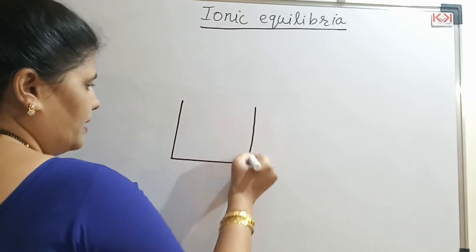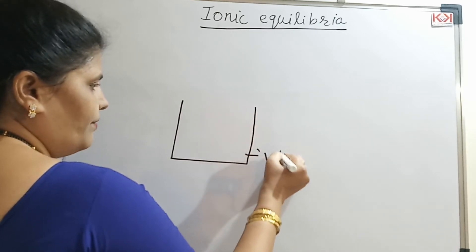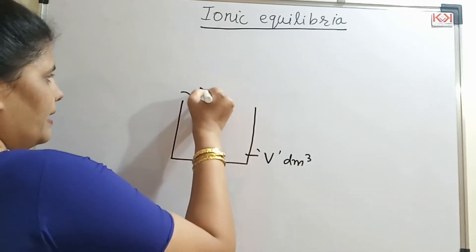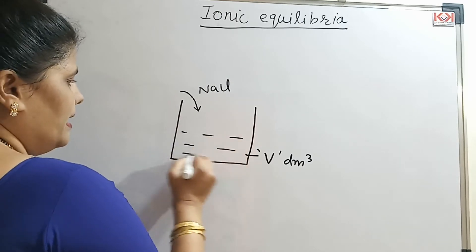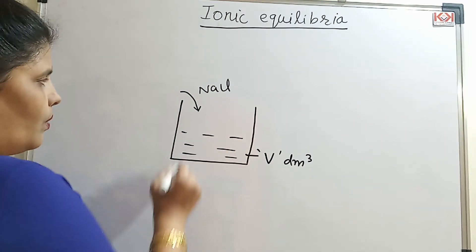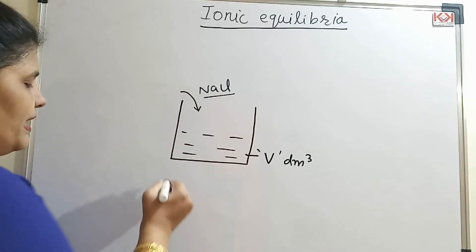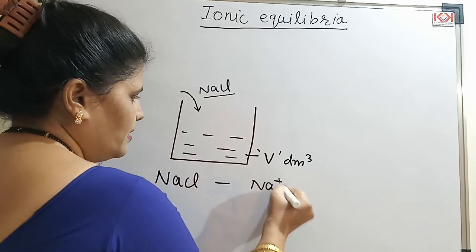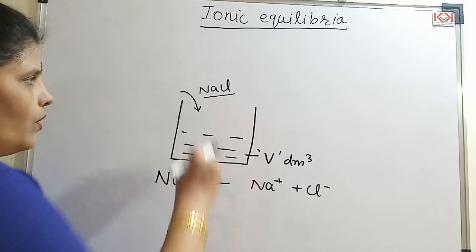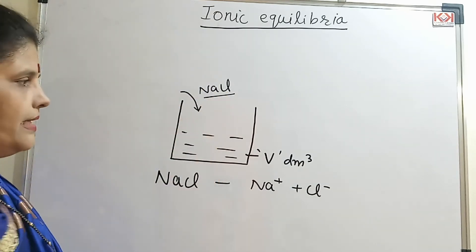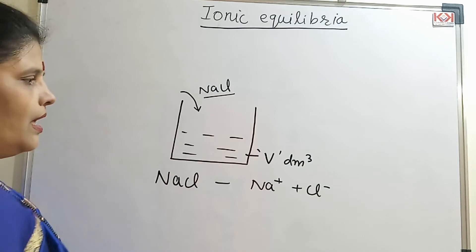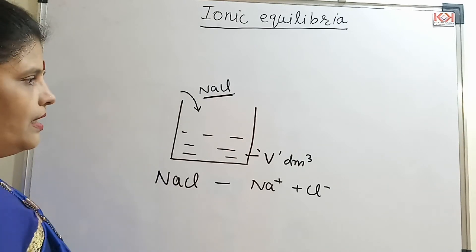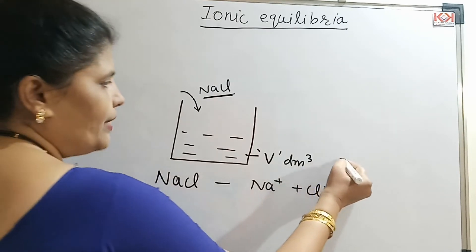Say for example, I have taken a beaker with a given volume of solvent. In this, I am adding NaCl. When I add NaCl to water or the given solvent, NaCl being a salt will dissociate to give Na⁺ ions and Cl⁻ ions. If I keep increasing the amount of NaCl in the given volume of solvent, a stage will come where NaCl will not dissolve further. You call this the saturation point.